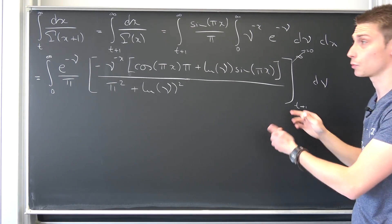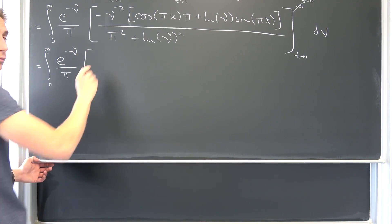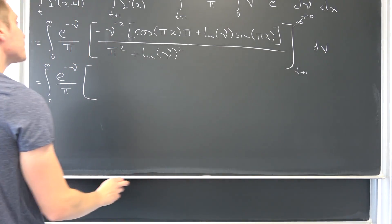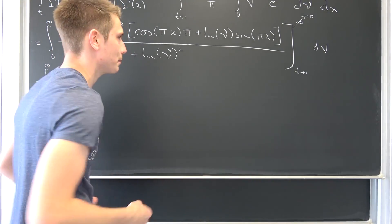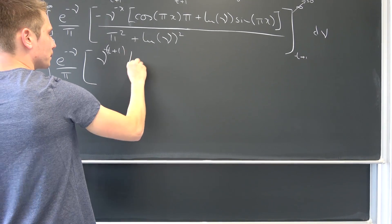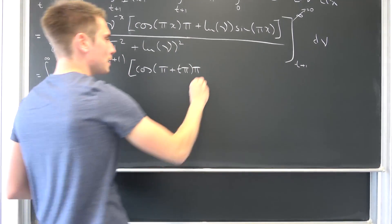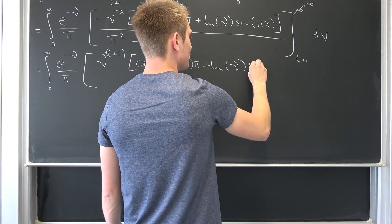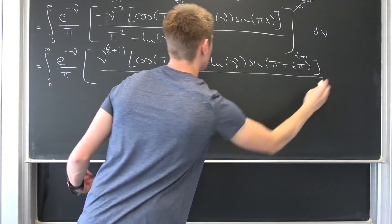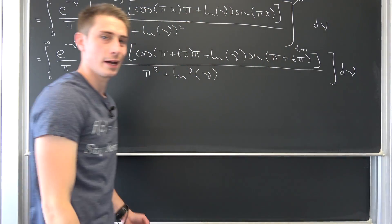We plug t+1 in and see what we actually get. We are going to have an integral from 0 to infinity of e to the negative μ over π. A lot of terms with negatives will become positive. Then we are going to have μ to the negative (t+1) power — because of that negative sign — times cosine(π + t·π) times π, plus ln(μ) times sine(π + t·π), all over π² plus (ln μ)², integrated with respect to μ. This looks absolutely abysmal.